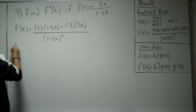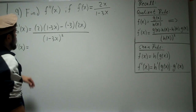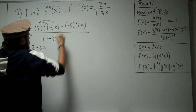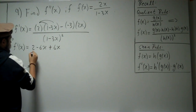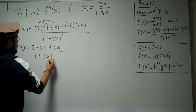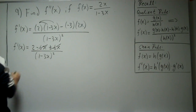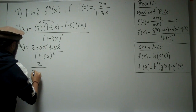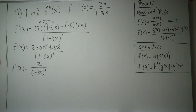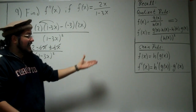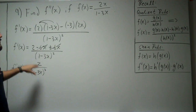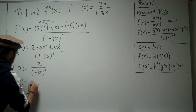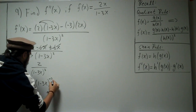Let's simplify this with some algebra. We distribute to get 2 times (1 minus 3x) minus negative 3 times 2x, which gives us a plus 6x. So the 6x terms cancel, and we're left with f prime of x equals 2 divided by (1 minus 3x) squared. We can rewrite this with a negative exponent as 2 times (1 minus 3x) to the negative 2.